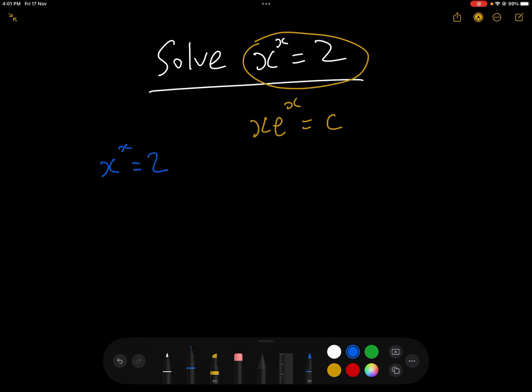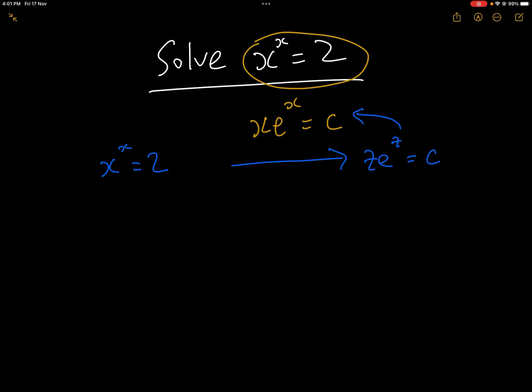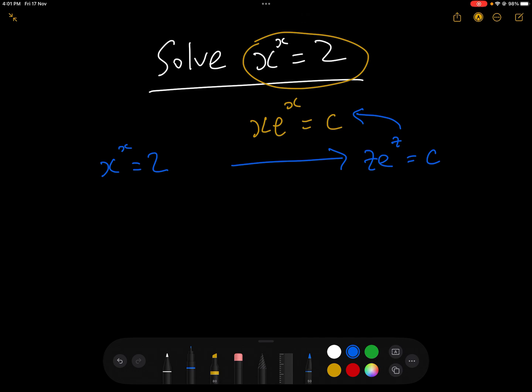What we need to do is get x to the power of x equals 2 in the form z*e^z = c, so that it is then solvable by using the Lambert W function, and the solution will be z = W(c), which we can then calculate using an online calculator.